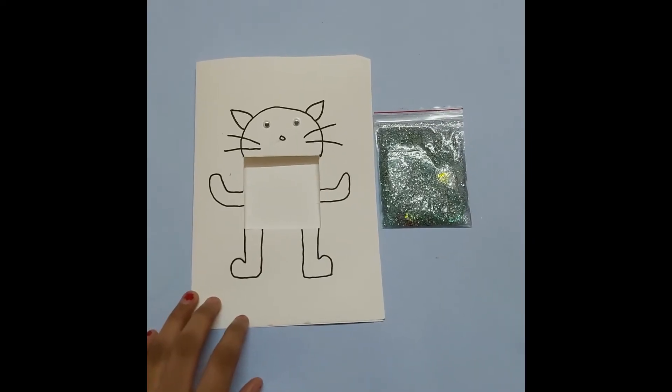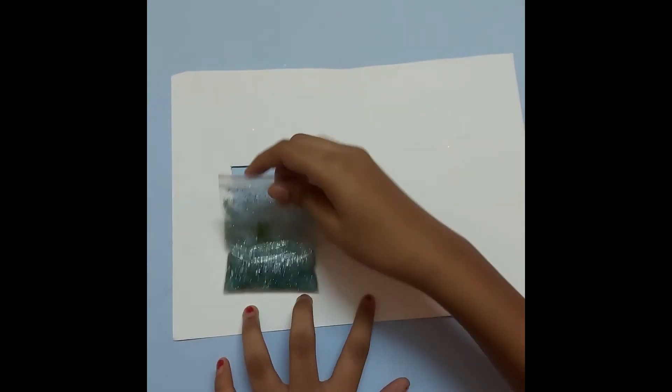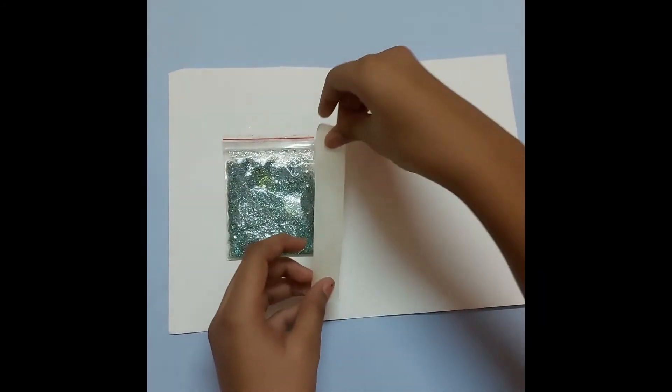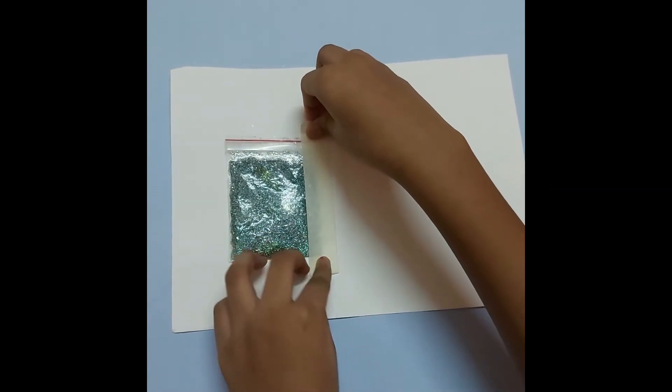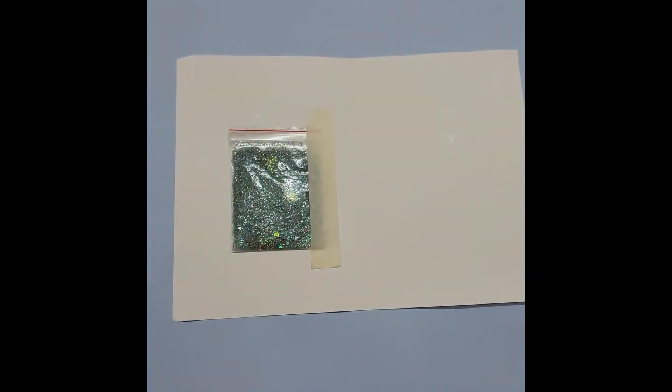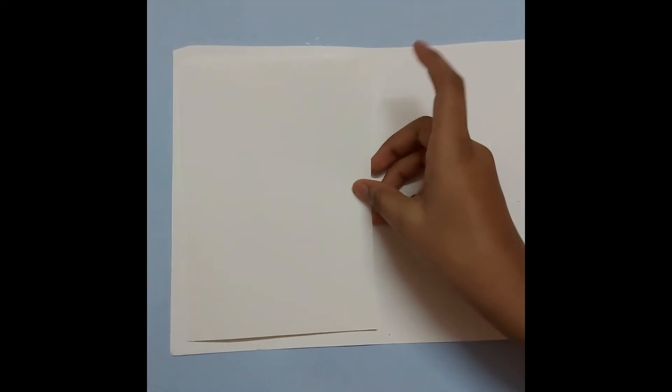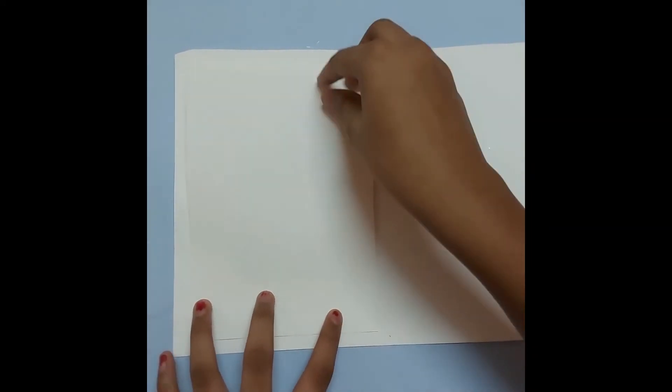Now take the A4 size chart paper. Open it. Paste this ziplock bag here and then using scotch tape paste it on the four sides. Now take half of the A4 paper I have told you earlier and then paste it here.